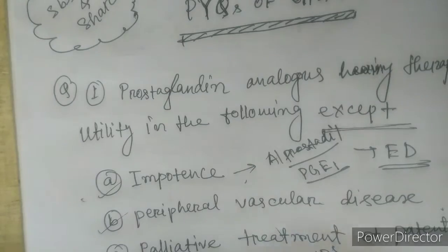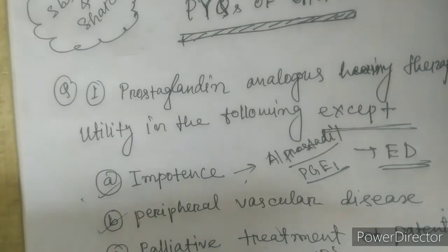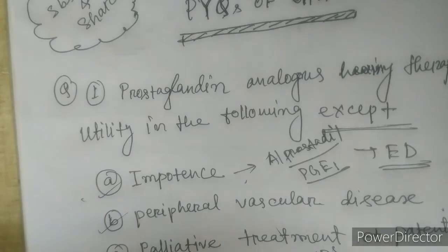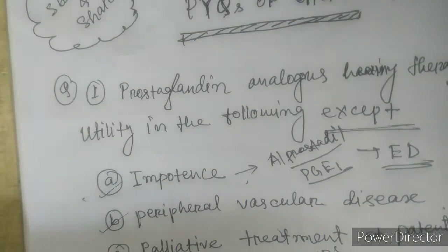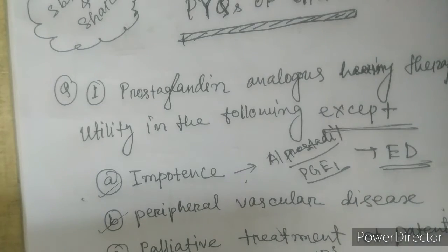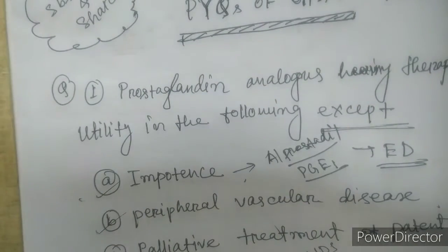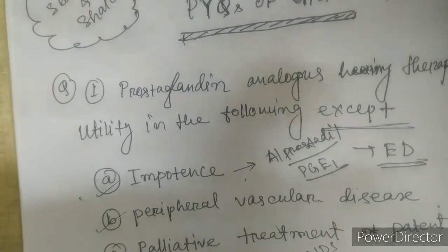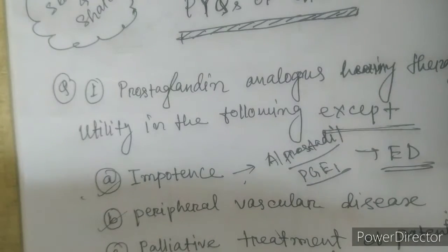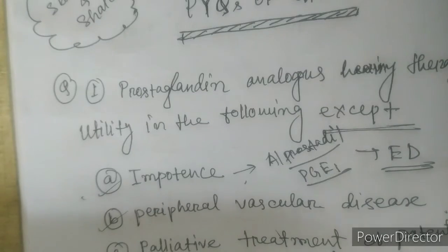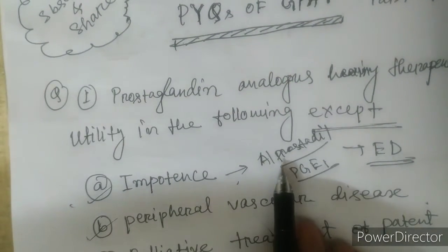Let's find out which disease is NOT cured by prostaglandin analogs. Option one is impotence — that means erectile dysfunction (ED), where the penis doesn't get proper erection during sexual intercourse. This is a major problem nowadays in India; it is the second most common sexual problem in men after premature ejaculation. Erectile dysfunction is treated by PGE1 analog, that is alprostadil.